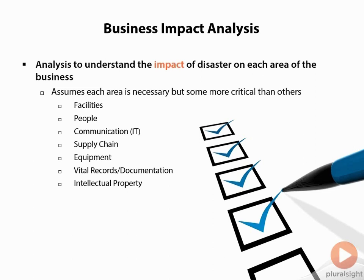We need to assume that each area is necessary, but some areas are more critical than others. Take things into account like facilities, people, your personnel, communication — which is basically IT — supply chain, how do you get new equipment in place, equipment itself, any vital records or documentation, all of your policies, and your intellectual property — things that you may not be able to get back quickly if you don't have them protected properly.